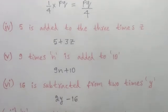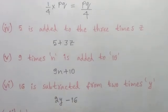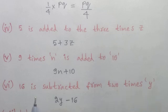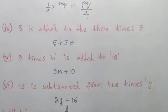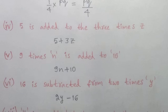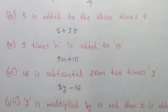Sixth one: 16 is subtracted from 2 times Y. First we write 2 into Y, then we subtract 16. So the expression is 2 into Y minus 16.